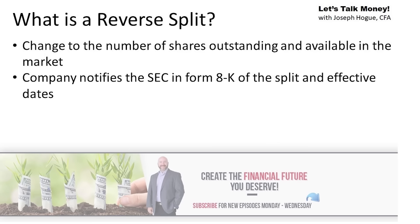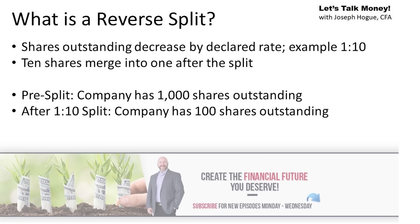In reality, a reverse split is pretty simple. A company notifies the SEC through Form 8K, which is just the form it uses to notify the public of any material changes in the investment or the company. The company will also declare the ratio for the split — so maybe a 1-for-10 split for example — and when the split is going to happen. What happens in a reverse split is the number of shares of that stock outstanding decreases by that ratio.